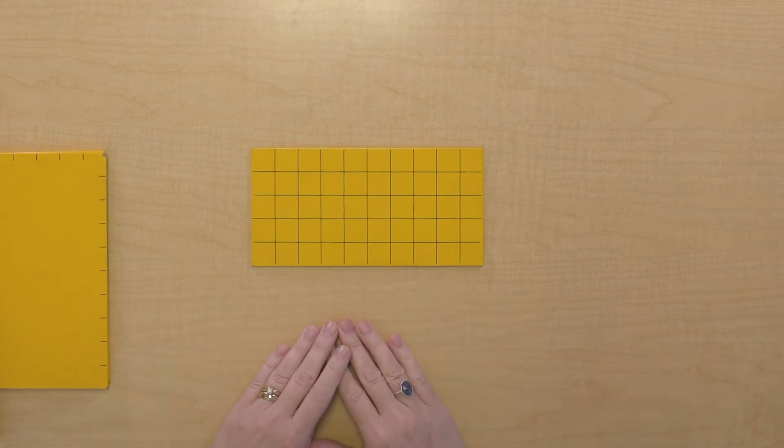So how do you want to count all of these? Do you want to skip count? Let's figure out how many we have. You're right, we have 50 square units.